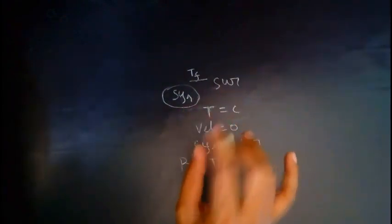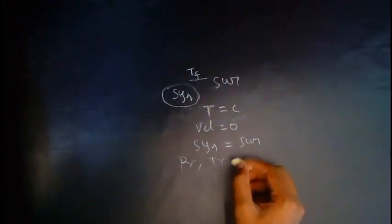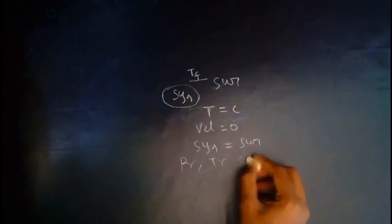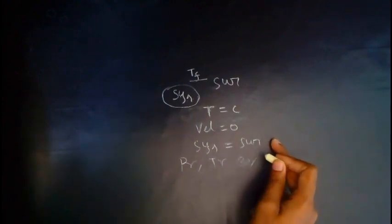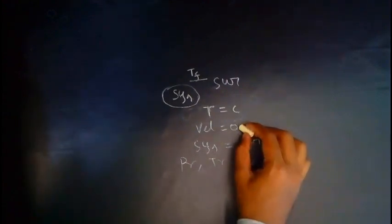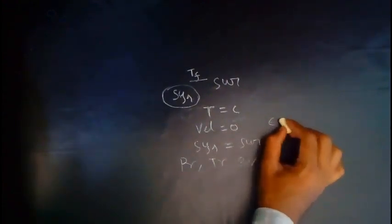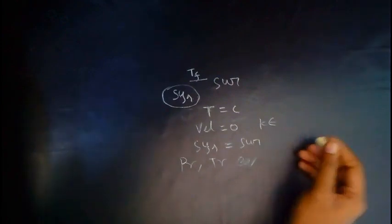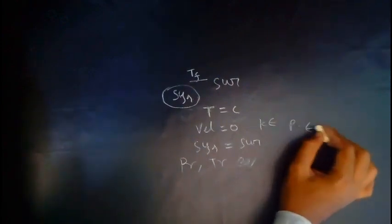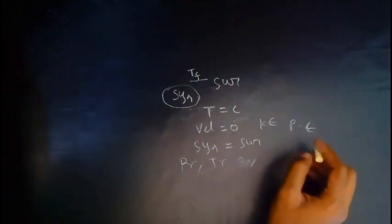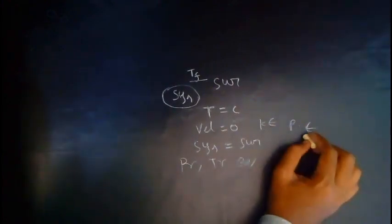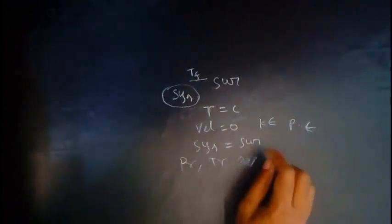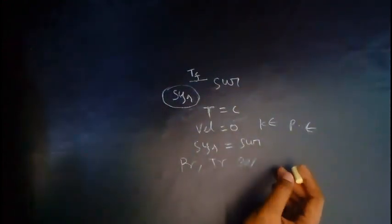The dead state can be described by pressure. If the system and surrounding have pressure, thermal, and chemical equilibrium, then that state is known as the dead state. Also, if there is no velocity, there will not be any kinetic energy and no movement. If the potential energy is minimum, it is also considered the dead state. So the dead state is a state at which kinetic energy is zero, potential energy is minimum, and pressure, thermal, and chemical equilibrium all exist.